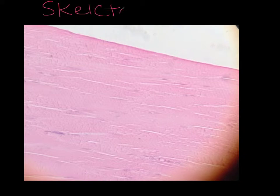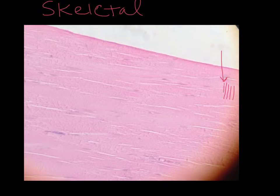Skeletal muscle is your only voluntary muscle, meaning you can control when you move it. There are two characteristics to look for when examining a slide of skeletal muscle. The first is the presence of striations — very fine stripes that you see crossing the entire muscle cell.